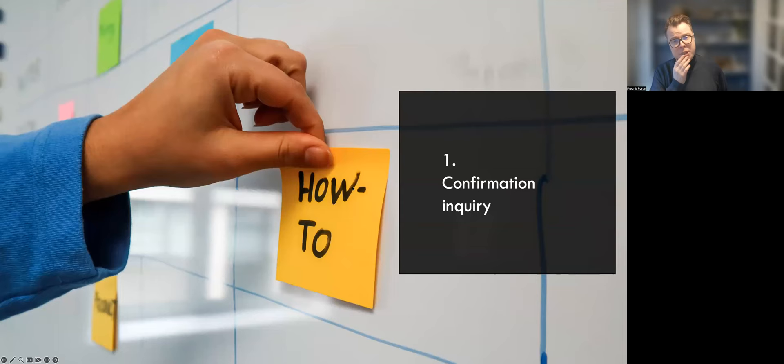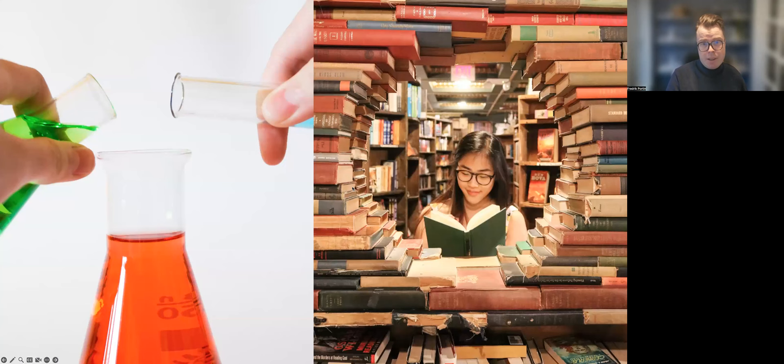Anyways, the first form of inquiry can be described as confirmation inquiry. This means that the teacher teaches a specific theme. To create deeper learning, the teacher then develops a task where the students have to go through a procedure where the end result is already known by the teacher.